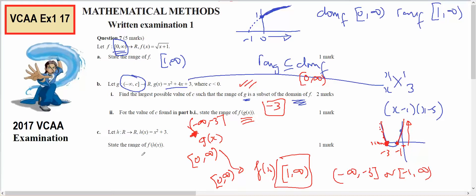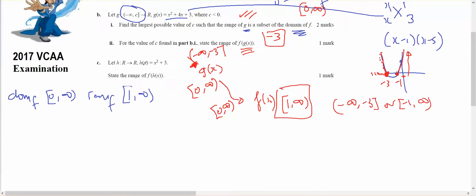Looking at part C, I've now got f of g. I've got f of x, and if I consider h, so the domain of h is all real numbers, and h is x squared plus 3. So the range of h is 3 to infinity.